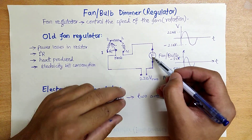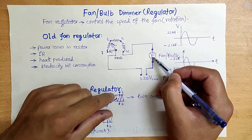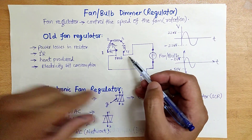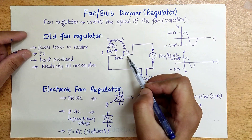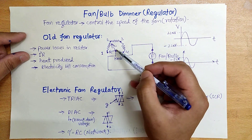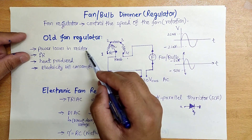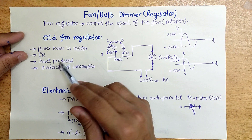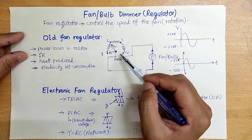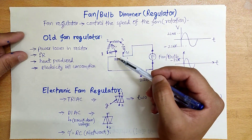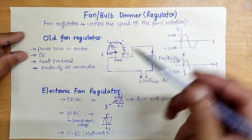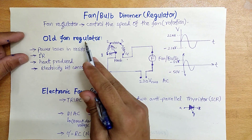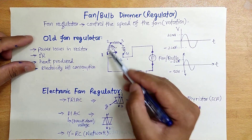If we put a bulb here, we will see that the intensity of the bulb will decrease. The main disadvantage of this circuit is that since it is a resistor network, there will be huge real power losses — I-squared-R losses — which produce heat in the system, decreasing efficiency. This heat will degrade our whole circuit, and the power losses will add up in our electricity bill.